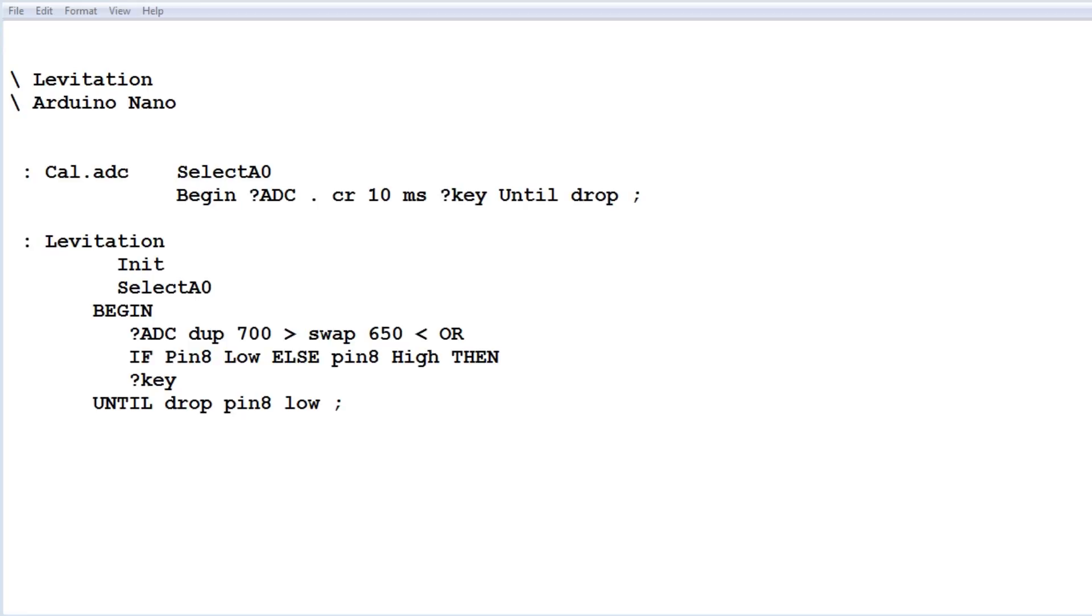Okay, here's a code running on my Nano for my levitation project, and it's written in Forth. It took me about 10 minutes to write the code, that's why I program in Forth. Now the first word you see there is CAL ADC, so that's my little calibration program. So if I run that, it's going to read the ADC from the Arduino Nano every 10 milliseconds, so it's going to read the linear Hall Effect sensor output every 10 milliseconds and give me an ADC reading.